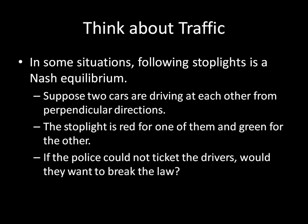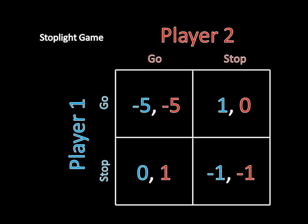So for an example of this, think about traffic. In some situations, following stoplights is a Nash Equilibrium. Suppose two cars are driving at each other from perpendicular directions. The stoplight is red for one and green for the other. If the police could not ticket the drivers because they don't exist, would these drivers want to break the law that says the driver who has the green light is supposed to go and the driver with the red light is supposed to stop? Well, the answer is no.